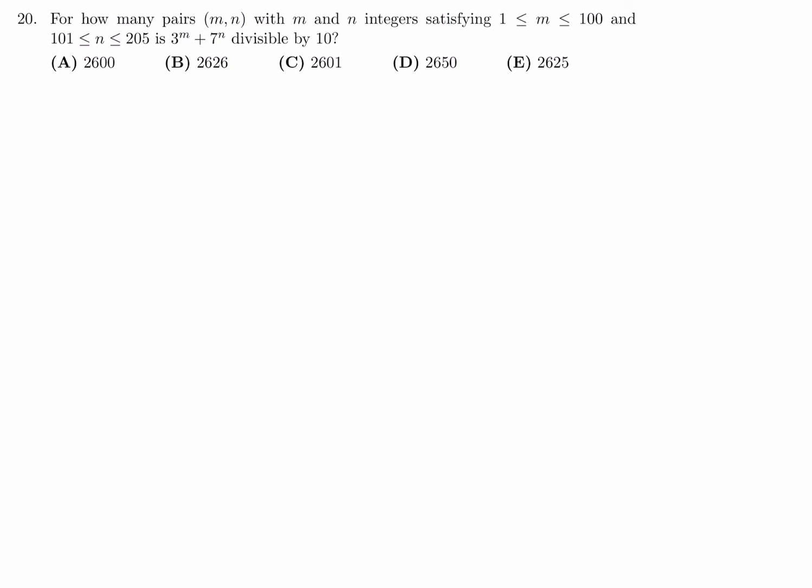For how many pairs (m,n) with m and n integers satisfying 1 ≤ m ≤ 100 and 101 ≤ n ≤ 205 is 3^m + 7^n divisible by 10? Alright, 3 to the power of m plus 7 to the power of n is divisible by 10. Well, how do we approach this? We have to look at the unit's digit - the last digit, or the one's digit, whatever you want to call it.